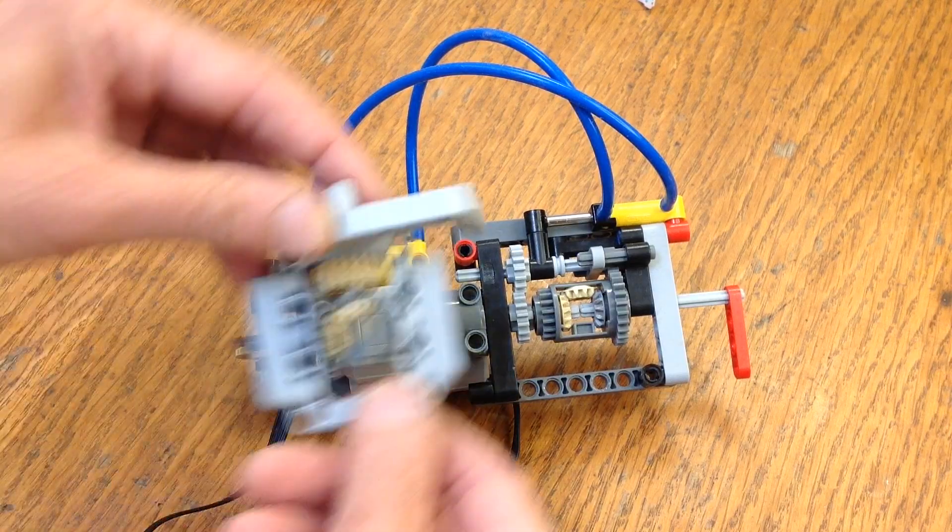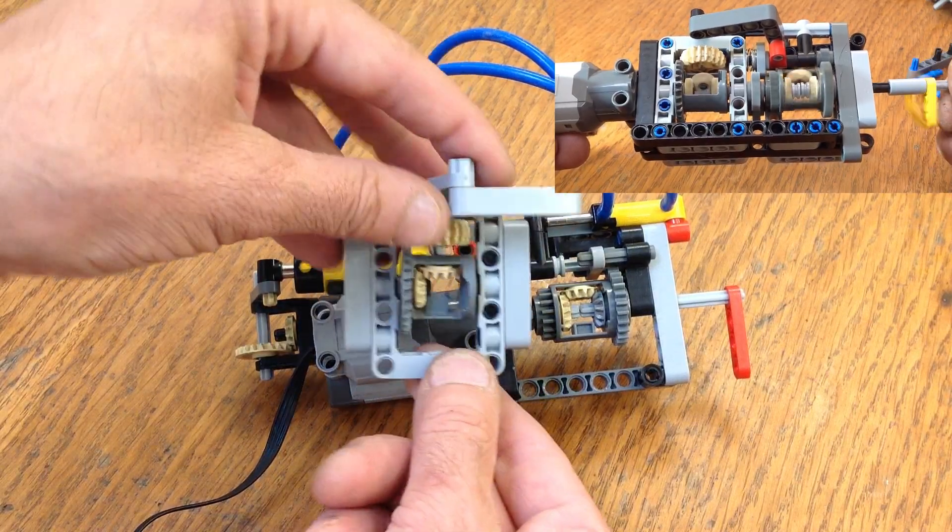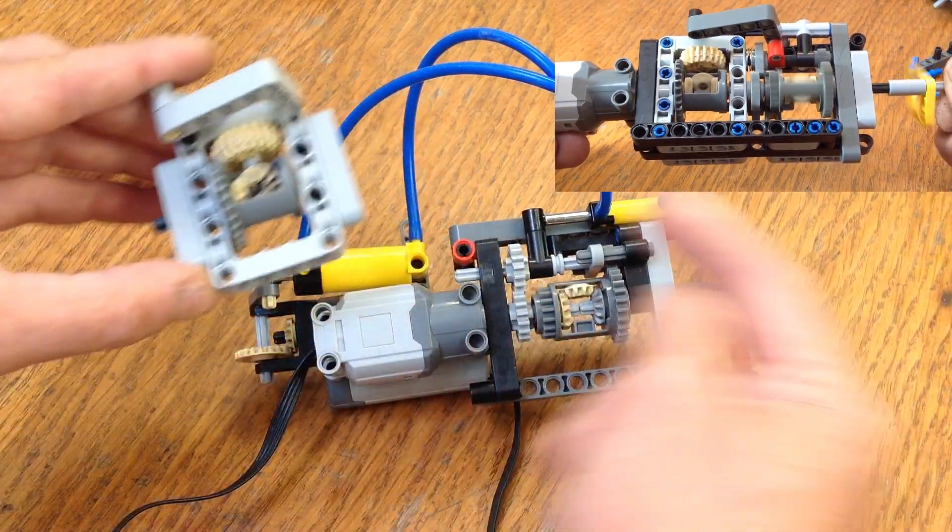Last time you saw this transmission, there was a torque sensor sitting right here, and when torque was applied to the drive axle, the arm here would move backwards and it would shift gears down.